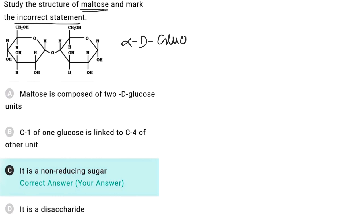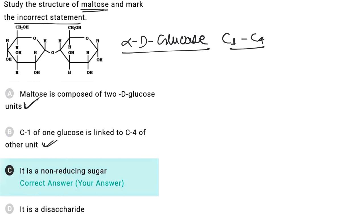Two alpha-D-glucose molecules combine to form maltose, and they have a C1–C4 linkage. Maltose is composed of 2 D-glucose units — this is a correct statement. C1 of one glucose is linked with C4 of the other unit — this is also correct. Counting the carbons confirms the C1 and C4 linkage is present. It is a disaccharide — this is also true.